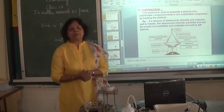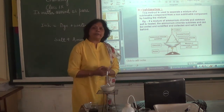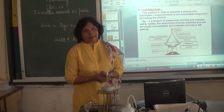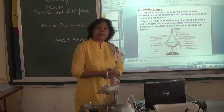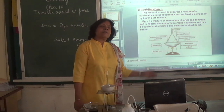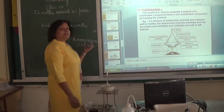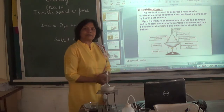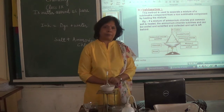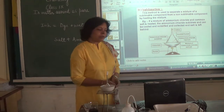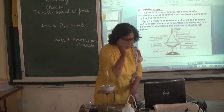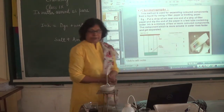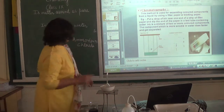Examples of solids which sublime on heating include iodine, naphthalene, anthracene, dry ice, and ammonium chloride. If any of these is mixed with any other solid which does not sublime, we can always use sublimation to separate them. The next technique we will study is chromatography — this is a very important technique.